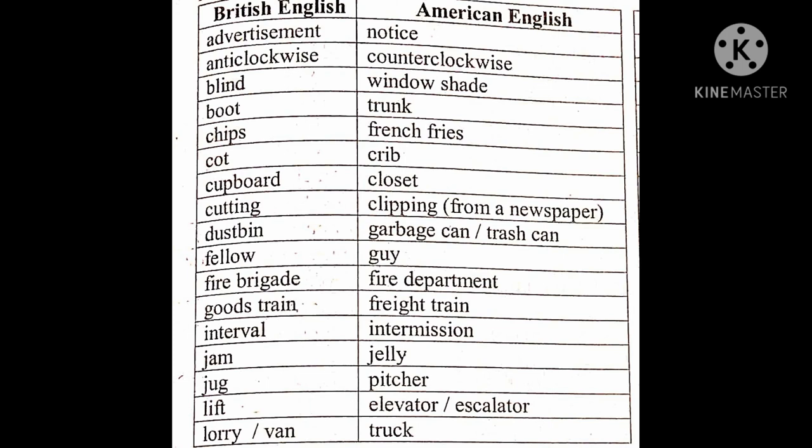Actually, you don't say 'cupboard' as pronounced — many people mispronounce it. It's pronounced 'cupboard.' Closet is the American equivalent. Wardrobe is also used. Then 'cutting' from a newspaper — if you cut some advertisement or some important article, that is a 'clipping.' Dustbin — you can say 'garbage can' or 'trash can,' both in American English.